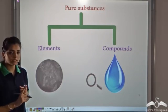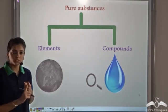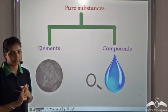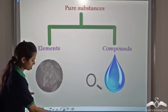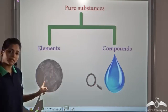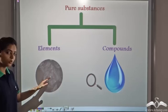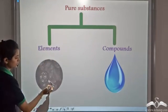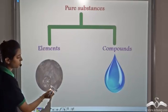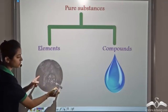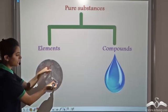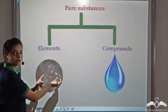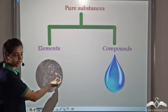Pure substances are those which are homogeneous and constituted of only one kind of particles. We have a coal piece — looking inside this carbon piece, you see that it looks homogeneous, that is it has the same constitution throughout, and it is constituted of only one kind of particles, which is the carbon atom.